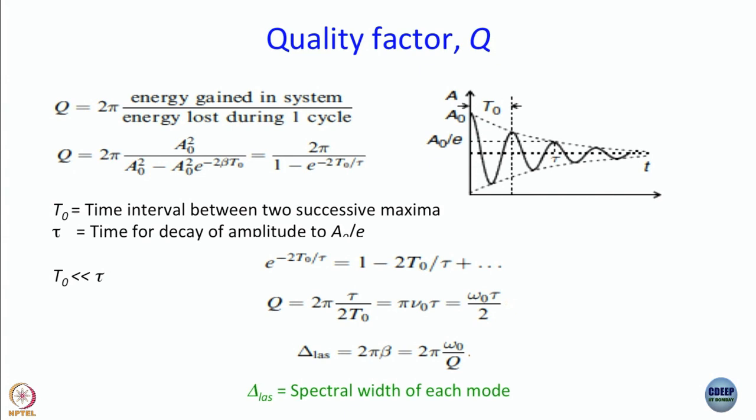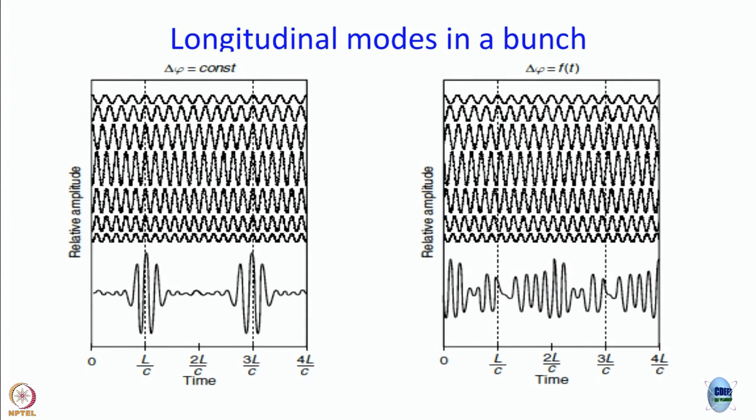We introduced another term very important for discussion of lasers: quality factor. Quality factor is essentially a weighted ratio of energy gained in the system and energy lost during one cycle. Energy gained means the buildup, how much population inversion is achieved, usually by pumping with an intense laser. Energy lost can be not just by emission of light but also due to heat and so on. Then we gave you the relationship between the spectral width of each mode and the quality factor Q. Very soon we will discuss Q switching, where we can generate pulses by switching the quality within the cavity.